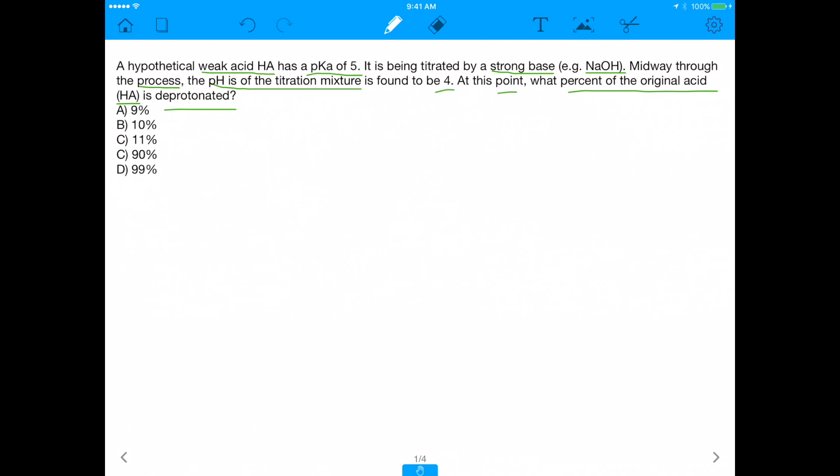So this is a perfect example of a Henderson-Hasselbalch equation problem. Why? Because any time you see pH and pKa together in a question stem, that's almost always an indication you will need to use the Henderson-Hasselbalch equation. And in this problem, you can see right away, the two key things we're given is the pH and the pKa.